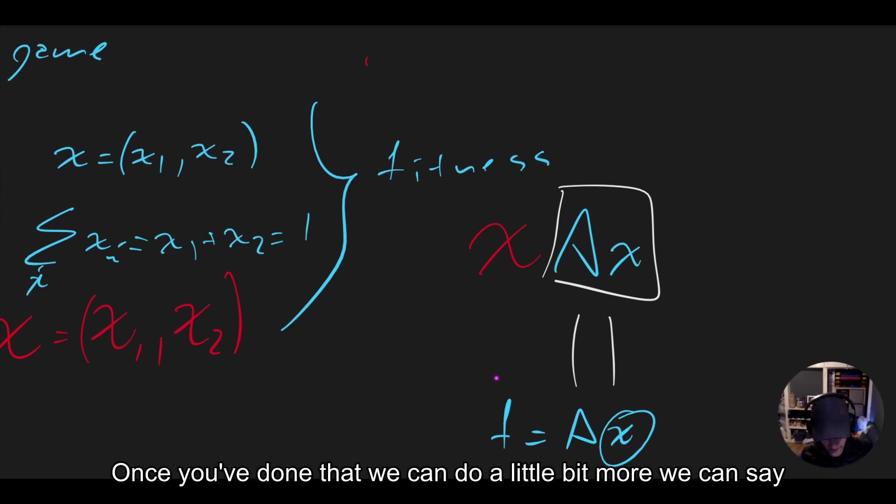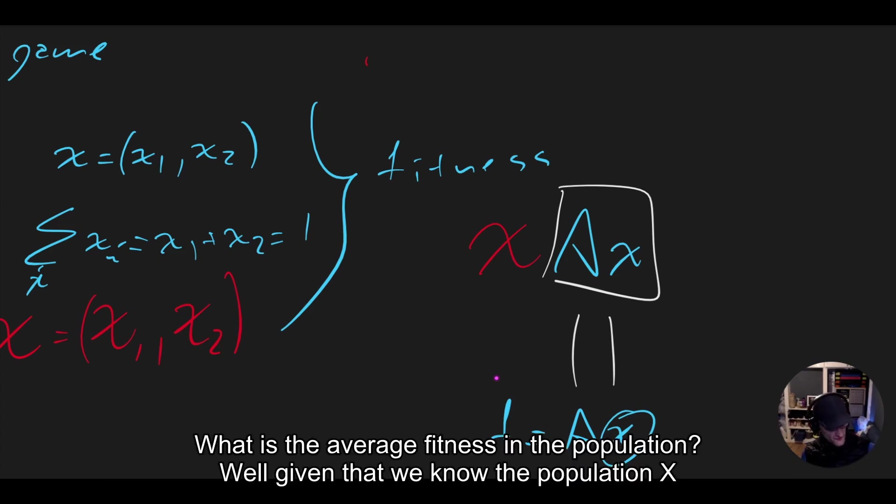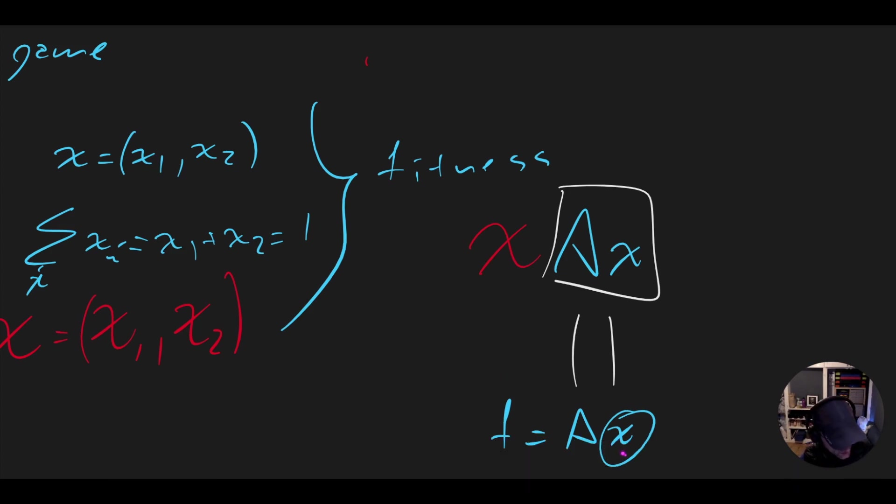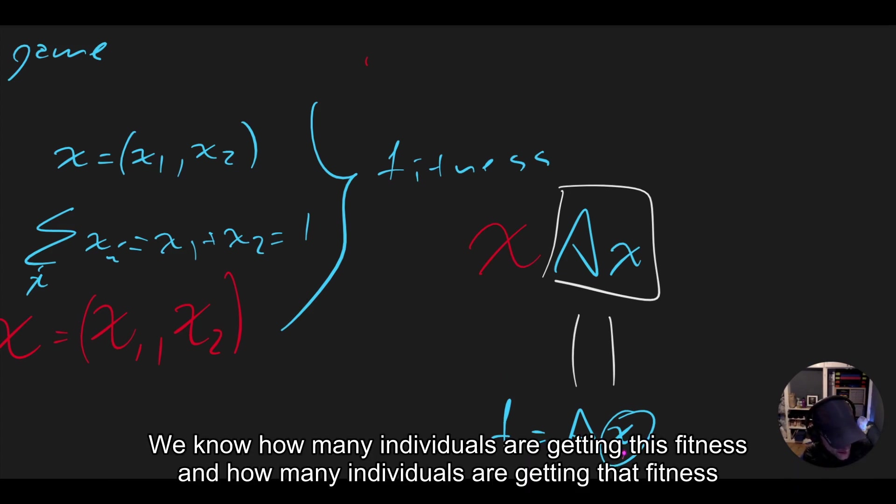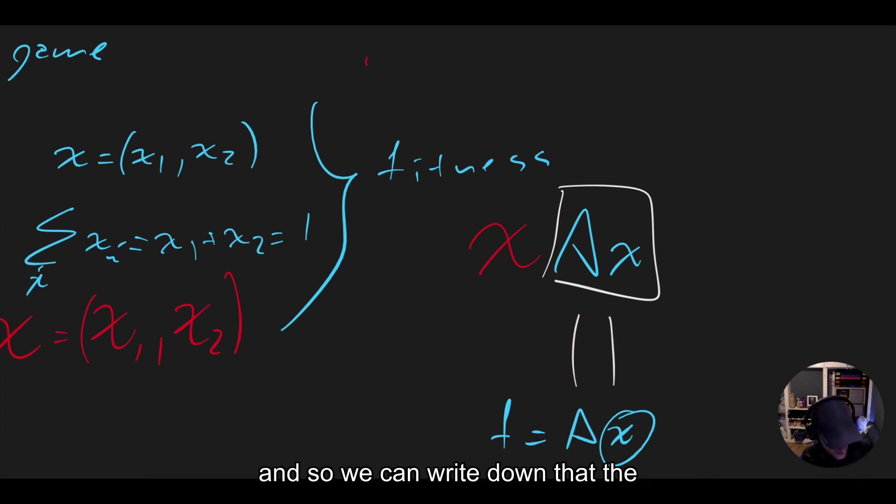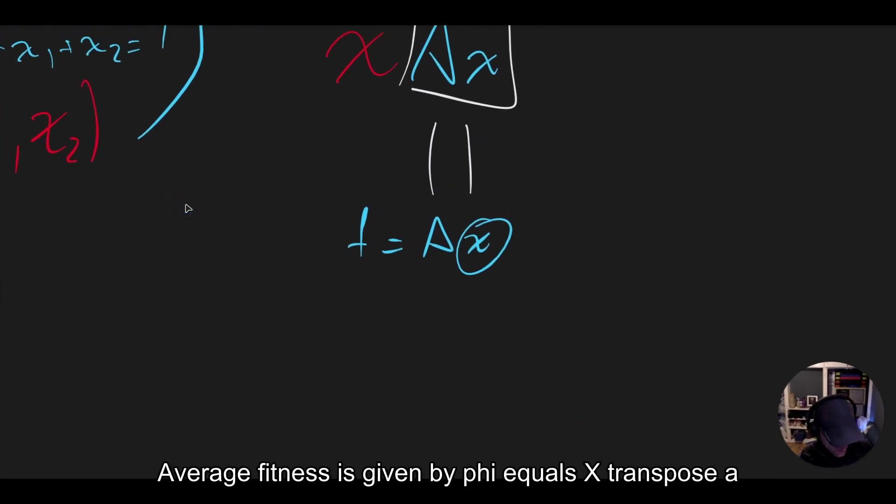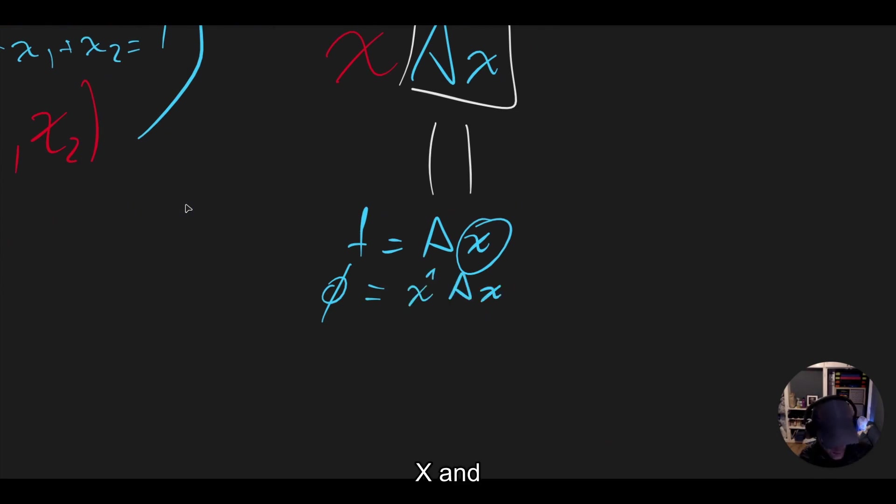Once we've done that, we can do a little bit more. We can say, what is the average fitness in the population? Well, given that we know the population X, we know how many individuals are getting this fitness and how many individuals are getting that fitness. And so we can write down that the average fitness is given by phi equals X transpose AX.